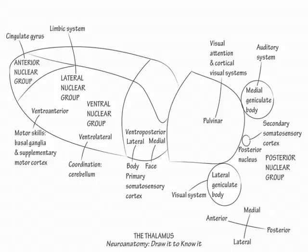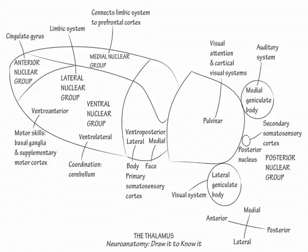On the medial aspect of the thalamus, label the medial nuclear group, which largely consists of the dorsomedial nucleus. Show that the medial nuclear group connects the limbic centers to the frontal lobe. It has afferent connections from the amygdala, hippocampus, and basal forebrain, and efferent connections to the prefrontal, premotor, and frontal eye field regions of the frontal lobe.